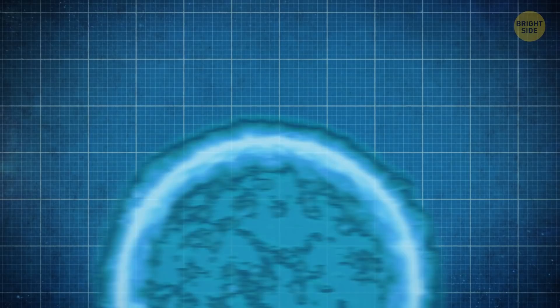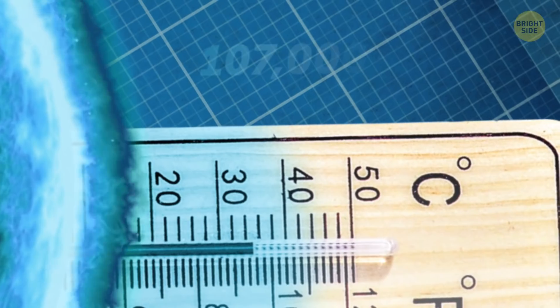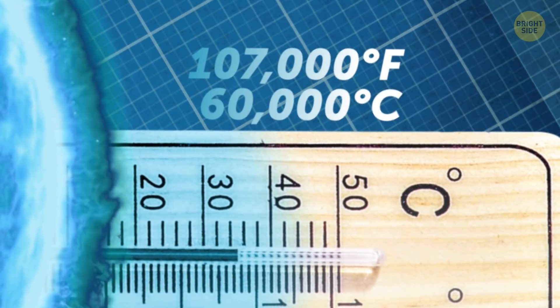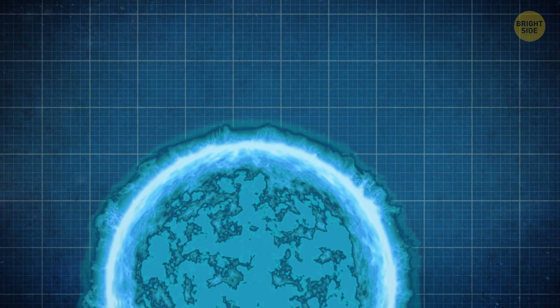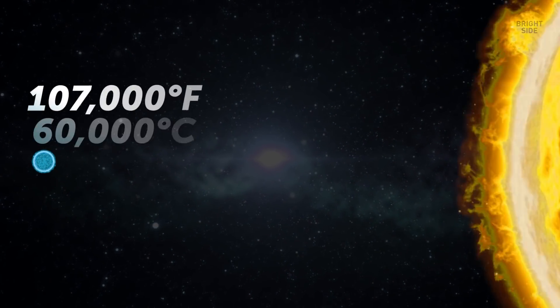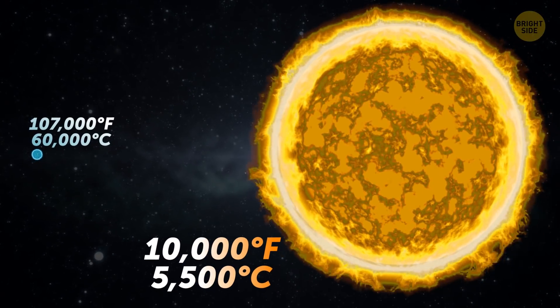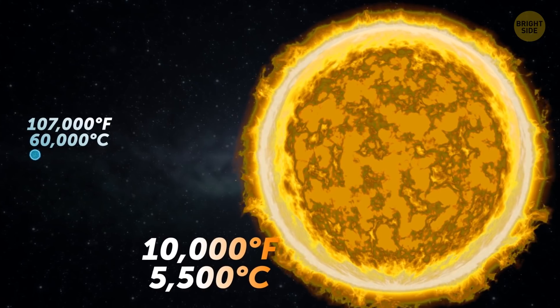Another extreme feature of neutron stars is their temperature. The surface can get heated up to a toasty 107,000 degrees Fahrenheit. S'mores, anyone? For comparison, the temperature on the surface of our Sun rarely rises above 10,000 degrees. In other words, a tiny neutron star can be 10 times hotter than our massive Sun.